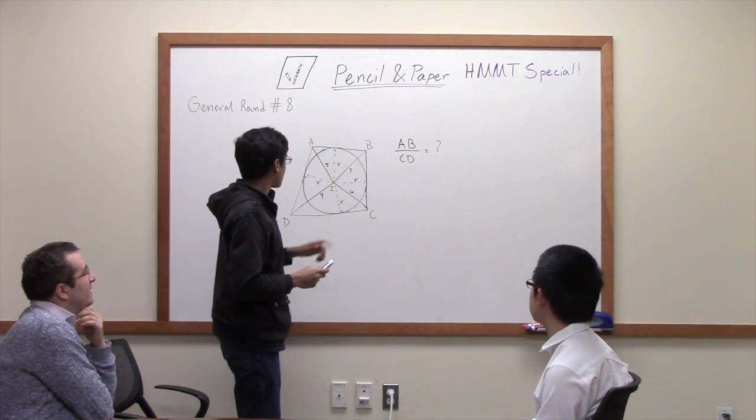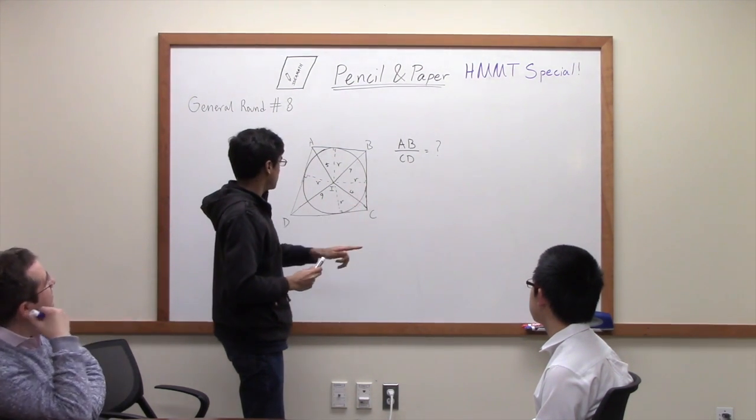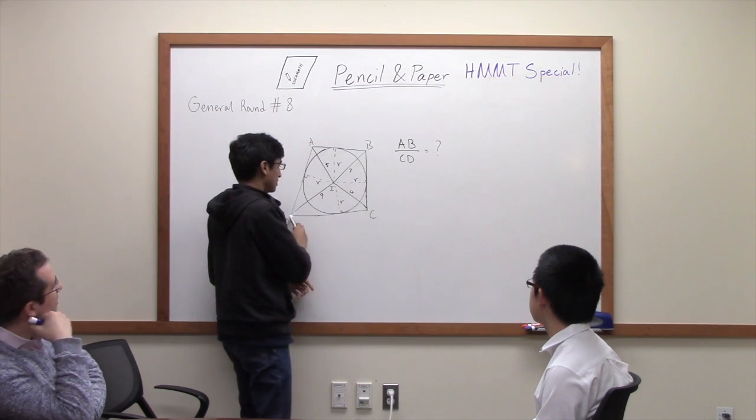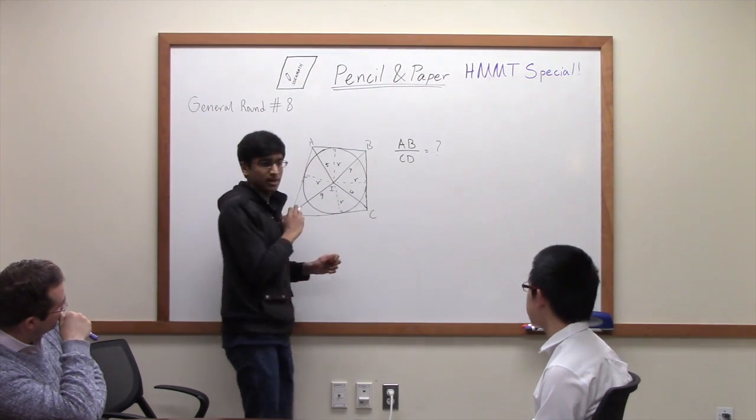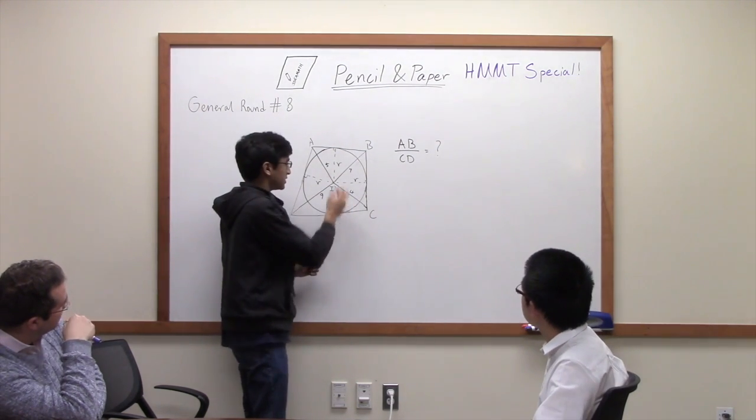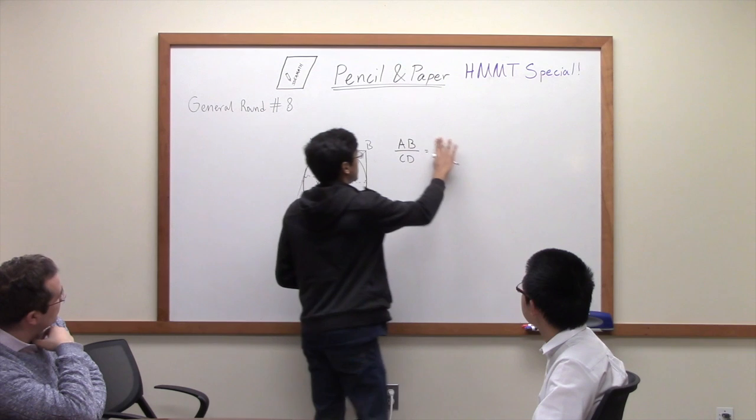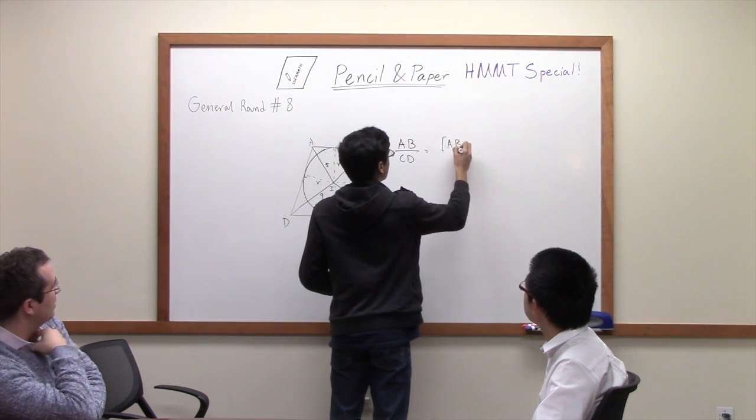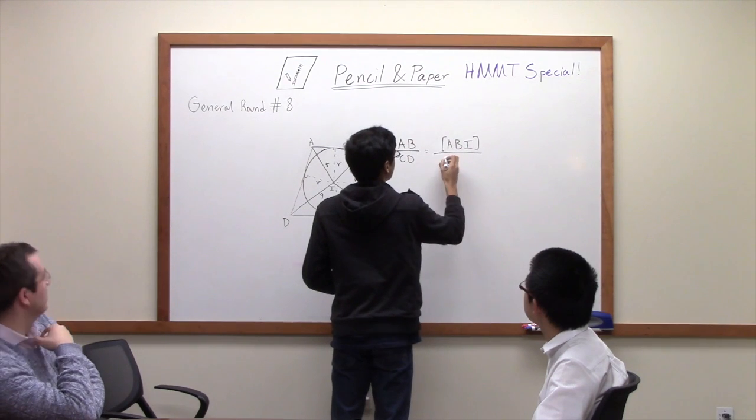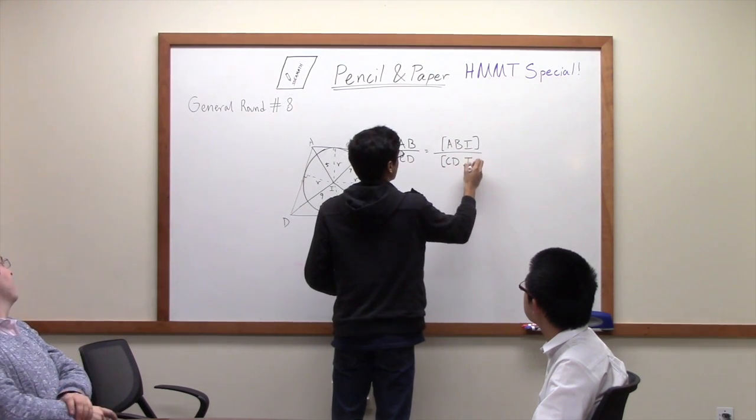And then you notice that AB over CD is going to be the ratio of the areas of triangle ABI to CDI because they have the same height, which is R. And so this is equal to the ratio of ABI to CDI.